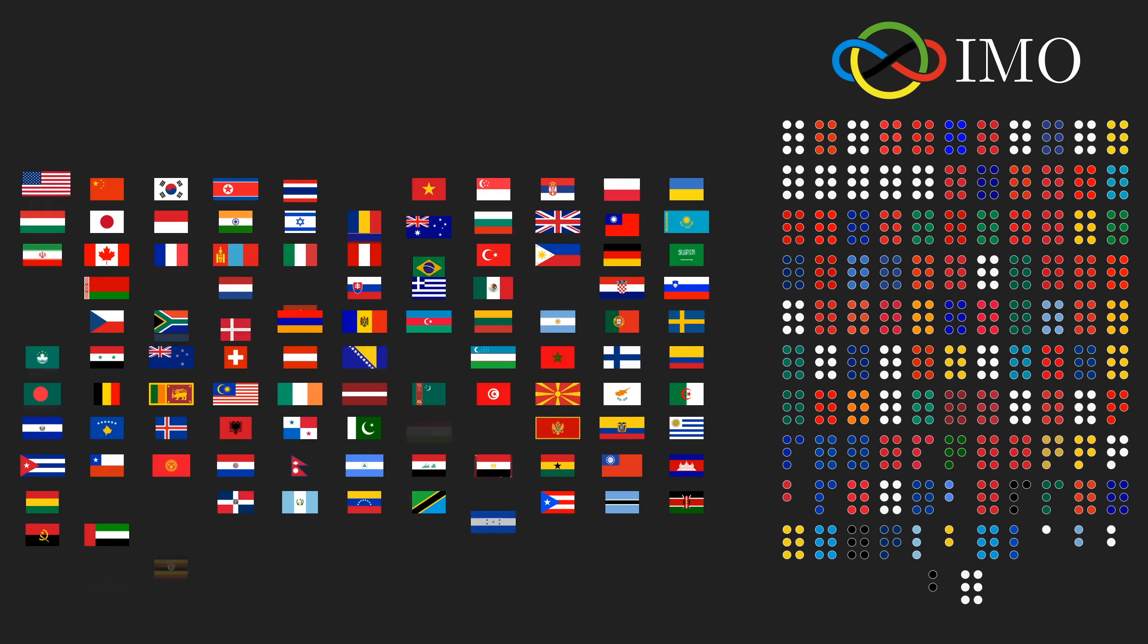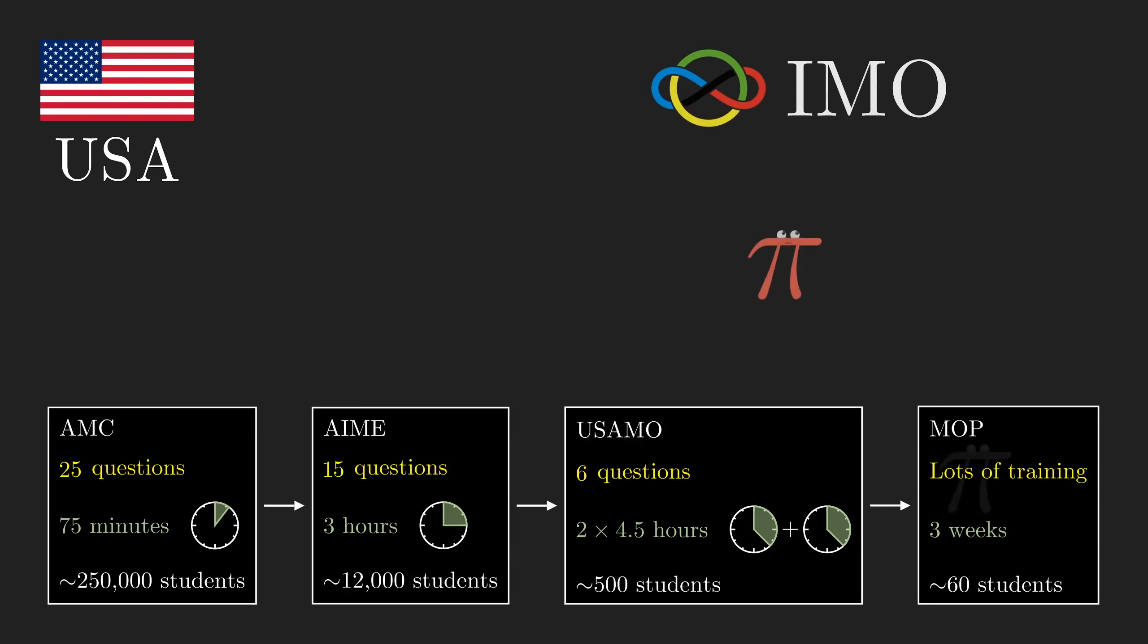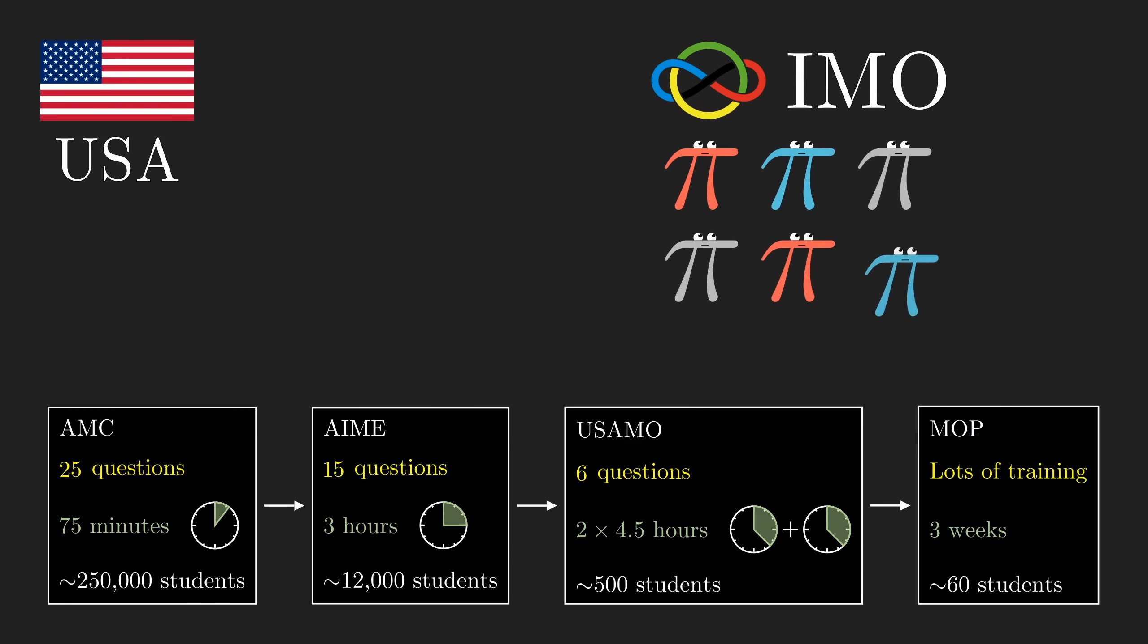Considering that each country has its own elaborate system of contests leading to their choice of six representatives, the IMO stands as the culminating symbol for the surprisingly expansive and wonderful world that is contest math.